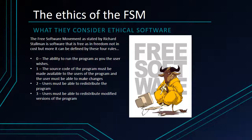Rule number one: the source code of the program must be made available to the user, and the user must be able to make changes. You get software, you also get the source code of that software so that you can study it and make modifications as you see fit. For example, if you were to get PowerPoint, you would not only get the PowerPoint program, you would get the PowerPoint source code so that you can go in, see what the software is doing, and make any changes you may want to make.